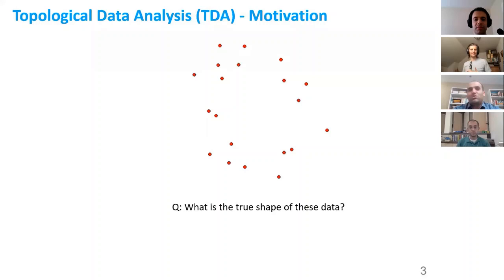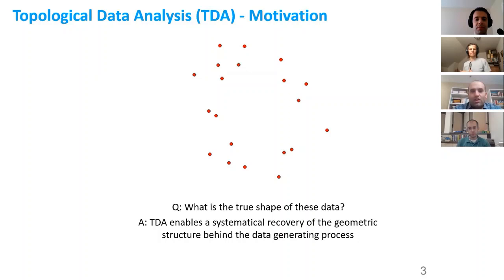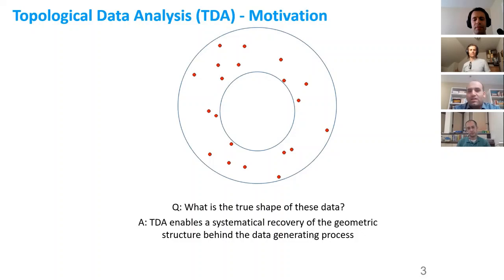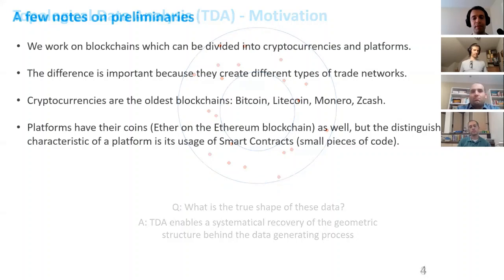I always ask: what is the true shape of these data? I would like to hear answers from network researchers, because usually we don't see data like point clouds — we have nodes as vertices and edges between them. TDA enables us to recover the geometric structure behind the data generating process. For example, we can see shapes with a hole in the middle, and TDA will allow us to extract this structure from data.